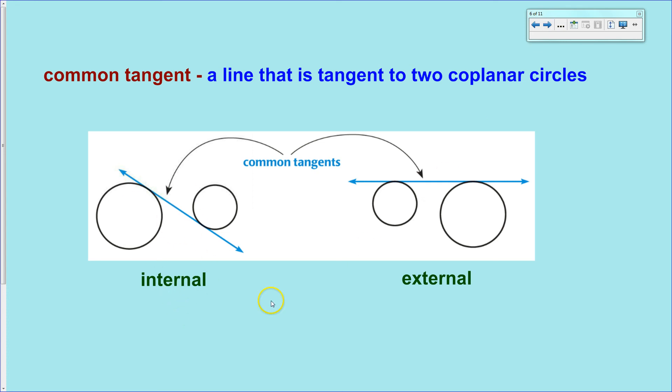There is an internal tangent line and there is an external tangent line where the internal one, the tangent line goes between the two circles. Both of these lines are still tangent. They touch each circle at exactly one point.